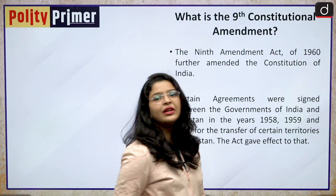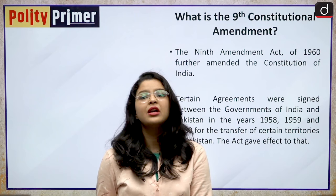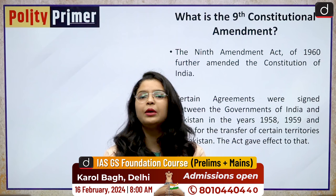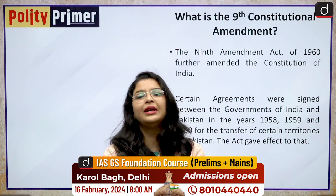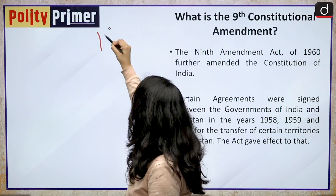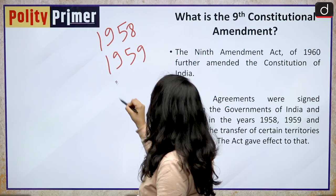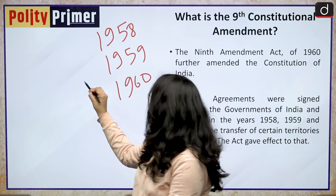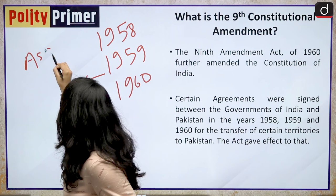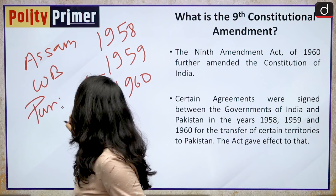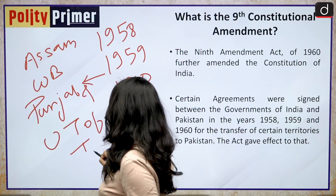The significance and importance of this constitutional amendment act: after we got independence, there were some border disputes between the government of India and the government of Pakistan. The government of India and the government of Pakistan signed three agreements in the years 1958, 1959, and 1960. These agreements were related to border disputes pertaining to some Indian states such as Assam, West Bengal, Punjab, and the Union Territory of Tripura.